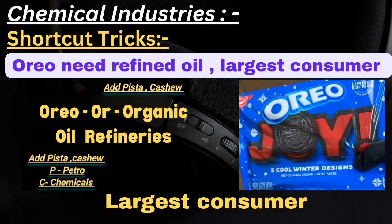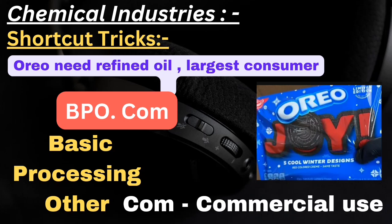Organic chemicals have their own largest consumer. We can order this biscuit on BPO.com - B represents basic, P represents processing, O represents other. Basic chemicals undergo some processing and produce other chemicals. COM represents commercial use, meaning these chemicals are used for commercial purposes.